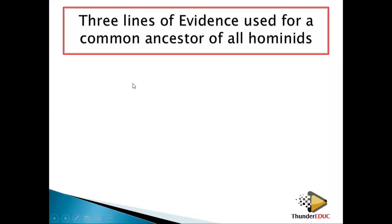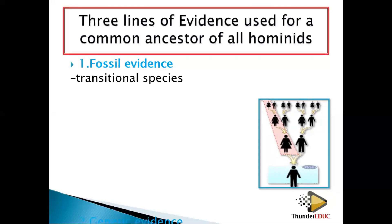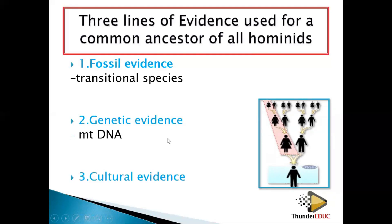Today we are going to be looking at the three lines of evidence used for common ancestor of all communities. Number one, fossil evidence — we will look at the different fossils. Remember, fossils are remains of living organisms; the remains of organisms which existed are what we call fossils. Number two, we are going to be looking at genetic evidence, focusing on mitochondrial DNA. And then number three is cultural evidence.